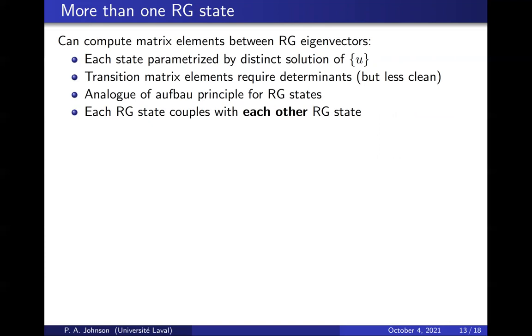Thankfully, there is an ordering principle for the RG states that allows you to label states as ground plus singles, doubles, etc. Unfortunately, each RG state couples with each other RG state, meaning that you're going to have to approximate something somewhere. However, we were able to show that while there is non-zero coupling, numerically they tend to zero pretty quickly. For a very small system, two pairs and four sites, there are six states.